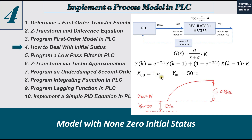Based on this initial status, once we give 3 watts to this system, the actual input of the model should be 3 minus 1 = 2 watts. And once we get the output from the model, as programmed in the previous video, the output of the model should then have the 50 Celsius degree added to it.